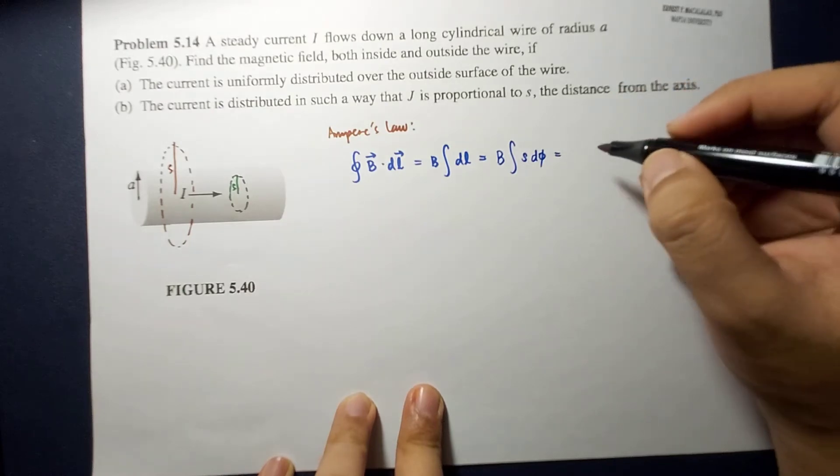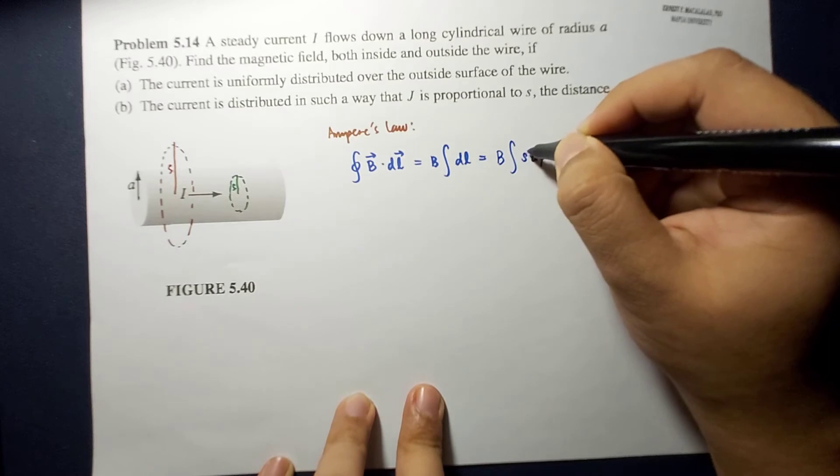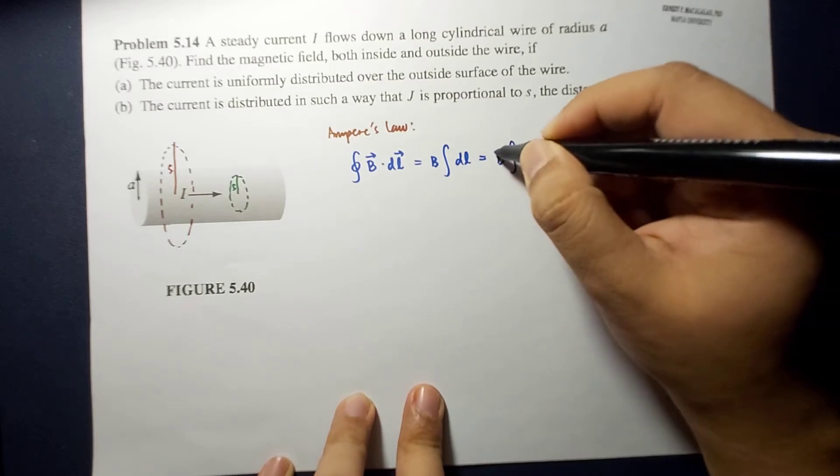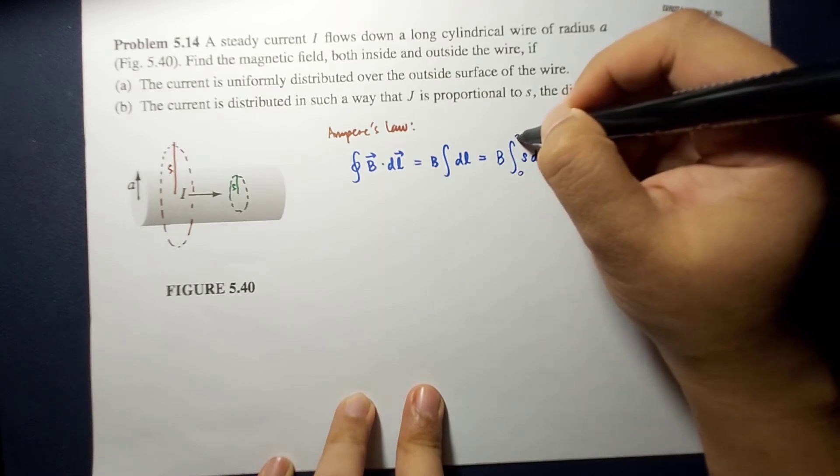Or, this is now equal to, because S is a constant with respect to phi, you can put it out. And then, the integral will be evaluated from 0 to 2pi.